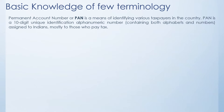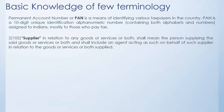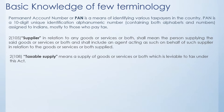Around 25 crores PAN numbers are already issued out of the total population of 125 plus. The next term is a supplier. The supplier in relation to goods or services means a person who is supplying the goods or services or both, and it also includes the agent who is acting on behalf of someone, and that someone is known as a principal.